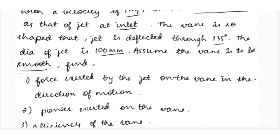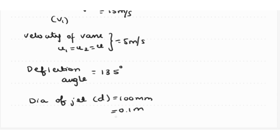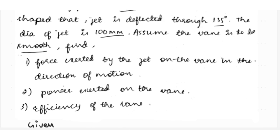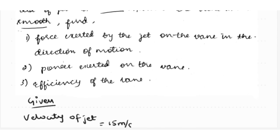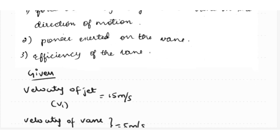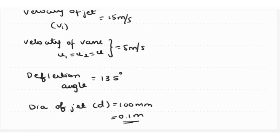The diameter of jet D is equal to 100 mm, which is equal to 0.1 meters. The vane is smooth, meaning Vr1 is equal to Vr2, so there is no loss of energy. We need to calculate: first, the force exerted in the direction of jet, Fx; second, power; and third, efficiency η.